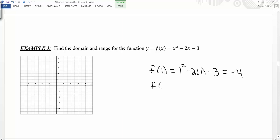I'm also going to plug in 0. So I have 0 squared minus 2 times 0 minus 3. So here I get 0 minus 0 minus 3, which is going to give me negative 3.